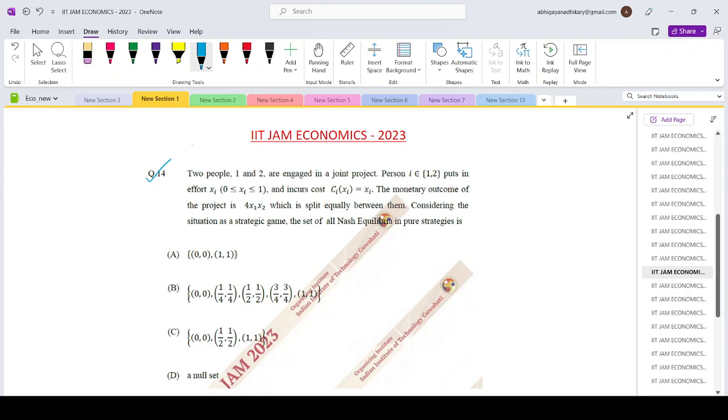Two people, one and two, are engaged in a joint project. Person i puts in effort xi, where xi lies between 0 and 1 and incurs the cost ci(xi) = xi. The monetary outcome of the project is 4x1x2 which is split equally between them. Considering the situation as a strategic game, the set of Nash equilibria in pure strategies is what?